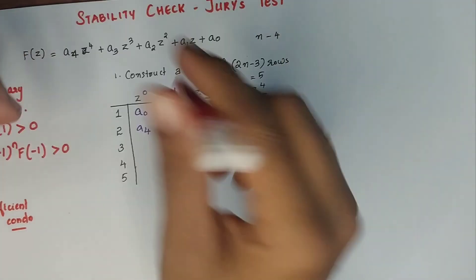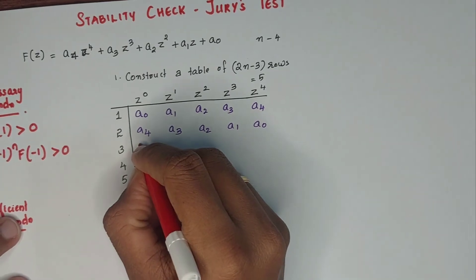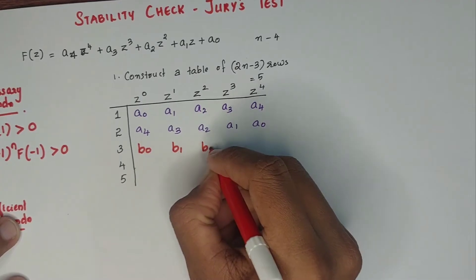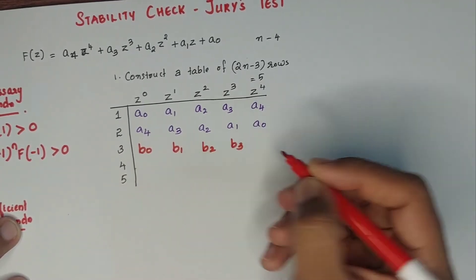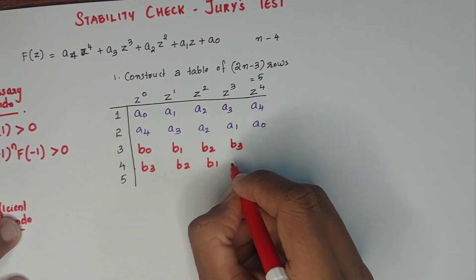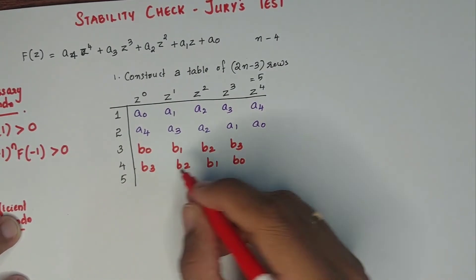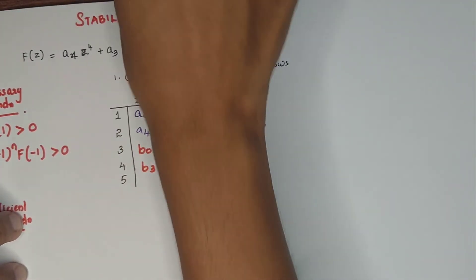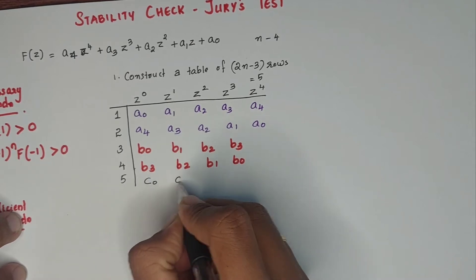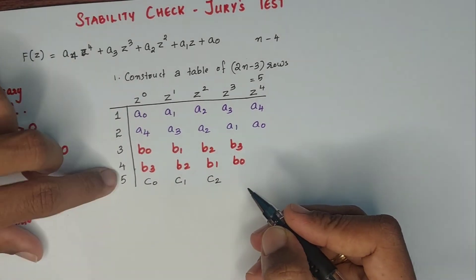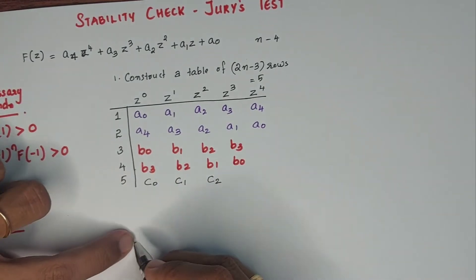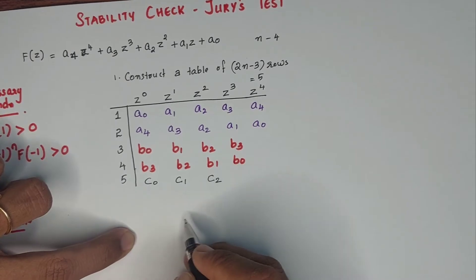The third row entries are named B0, B1, B2, B3. The fourth row is their reverse: B3, B2, B1, B0. The fifth row entries are C0, C1, C2, and its reverse C2, C1, C0. There is also a D0, D1 row.